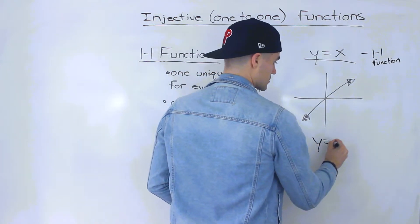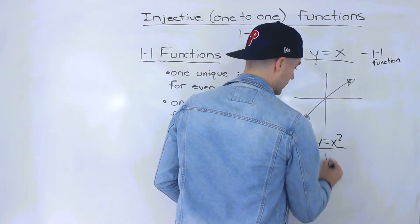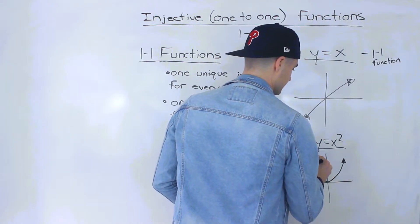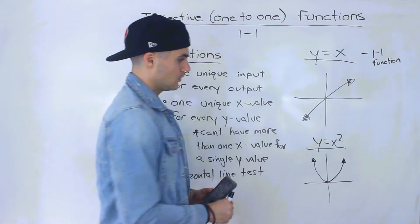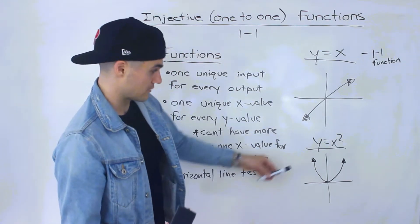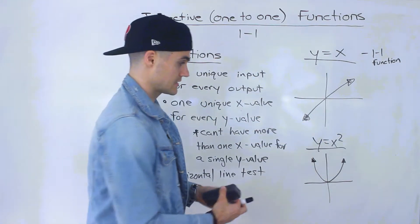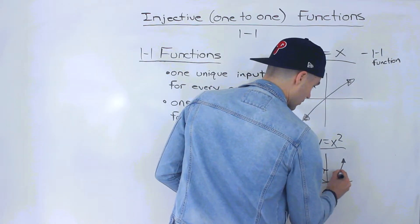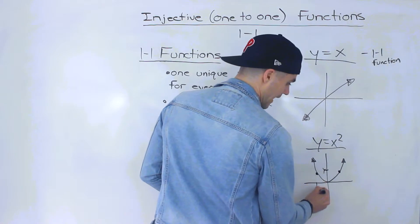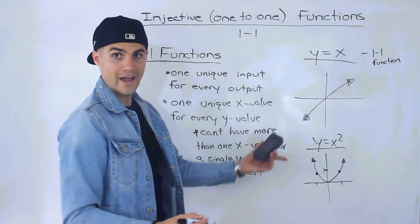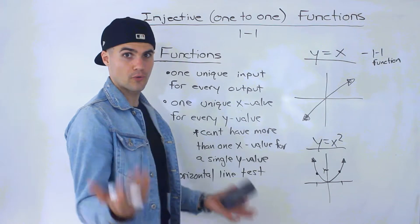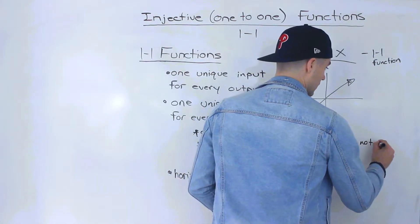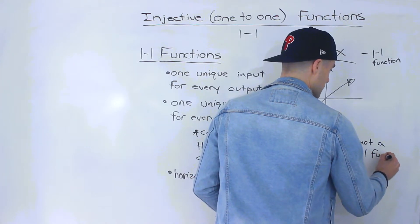What about y = x², the parabola? If we run a horizontal line through it, it fails the horizontal line test — for a single y-value there are multiple x-values. So y = x² and any parabola is not a one-to-one function.